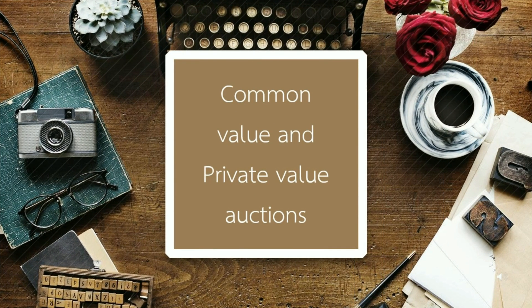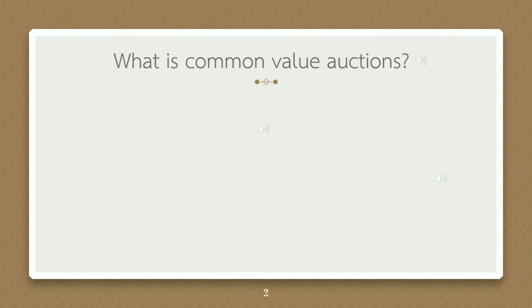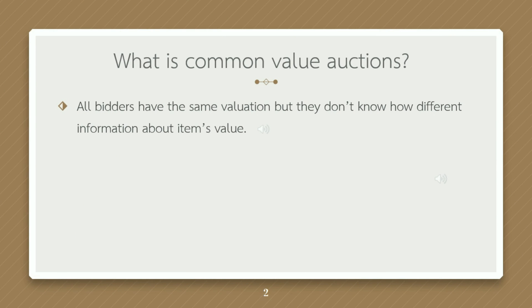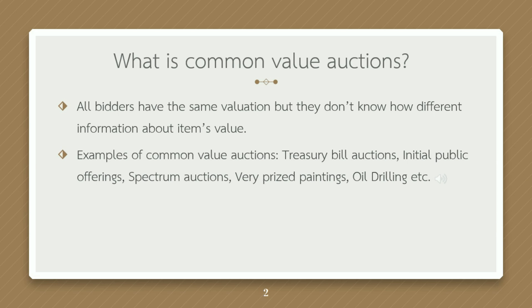Common value and private value auctions. In common value auctions, all bidders have the same valuation but they have different information about the item. Examples of common value auctions include treasury bill auctions, initial public offerings, spectrum auctions, prized paintings, oil drilling, and more.